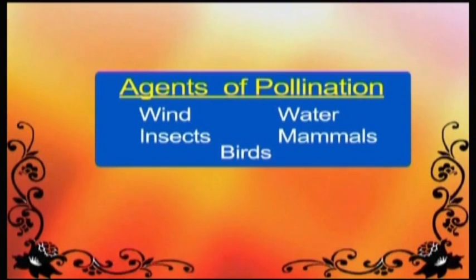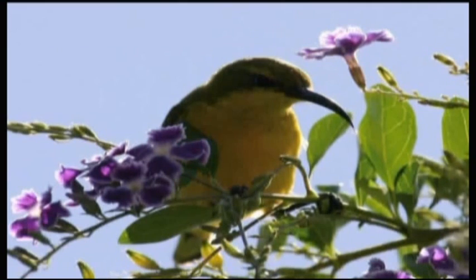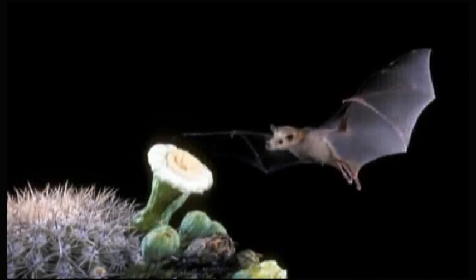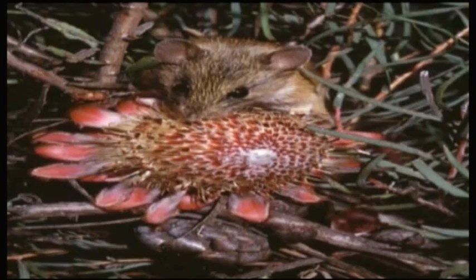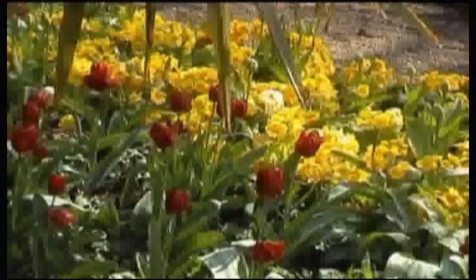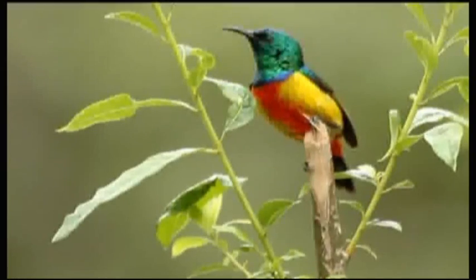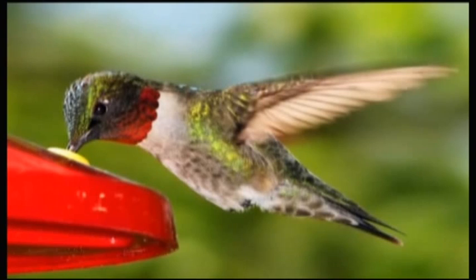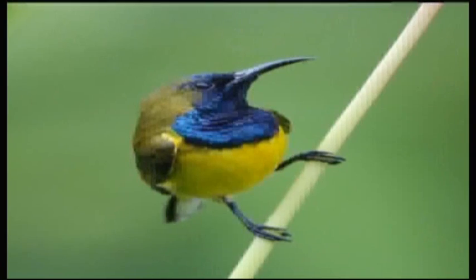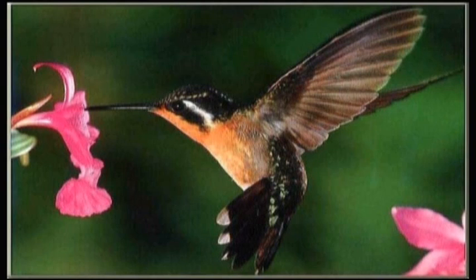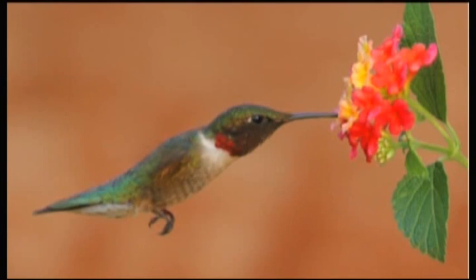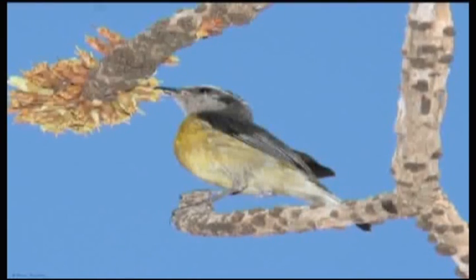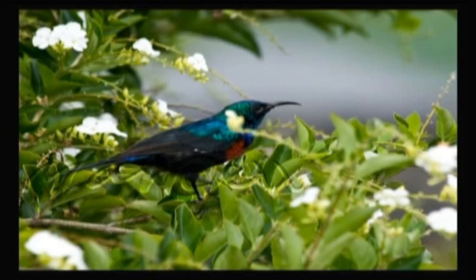Birds. Bird-pollinated flowers are much more common than mammal-pollinated flowers. Two large groups of birds which pollinate flowers are the sunbirds of Africa and Asia and the hummingbirds of the Americas. Both groups of birds have long beaks that allow them to reach inside the petal tubes of flowers. Hummingbirds are well known for their ability to hover in front of flowers while drinking the nectar. Some birds, however, sit on the flower stalk and collect the nectar.